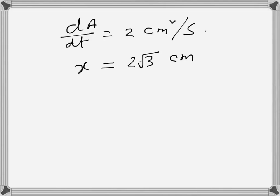It's given that the area of an equilateral triangle is increasing at this rate, so if the area is A, dA/dt is 2 centimeters square per second. Let's say the side is X, so it's given that when the side is 2√3 centimeters, at what rate are the sides increasing? First we have to find the area of the equilateral triangle.